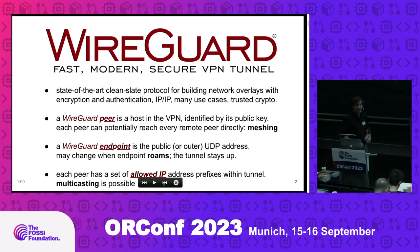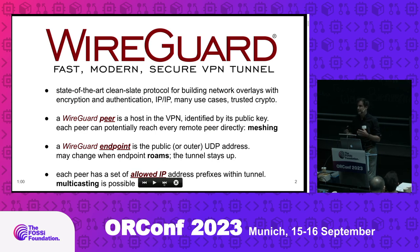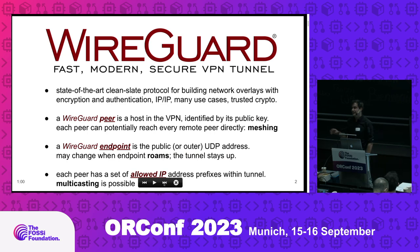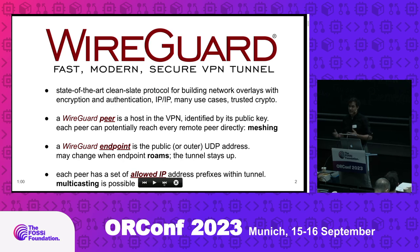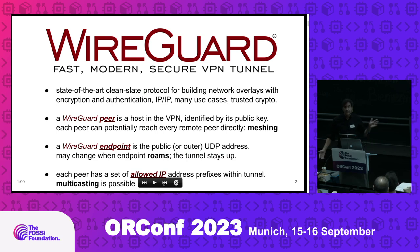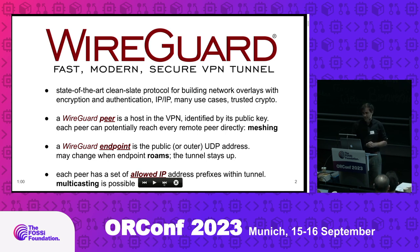A few terms: a WireGuard peer is an endpoint, or a host on the virtual network, and every peer can reach every other peer, so the network supports meshing. An endpoint is the public IP address where you can reach remote peers on the public internet. Endpoints are allowed to roam — they can roam between 5G, Wi-Fi, switching external public IP address. Each peer has a set of allowed IP addresses, which can be a very large list of network address prefixes within each tunnel. And multicasting is possible — I found out last week, actually.